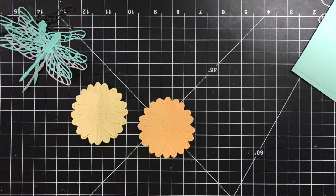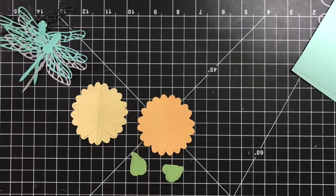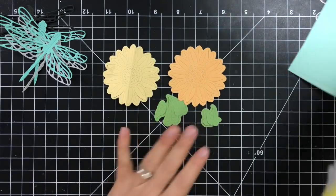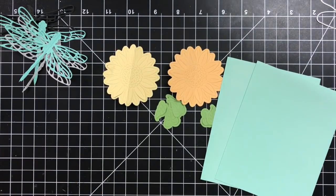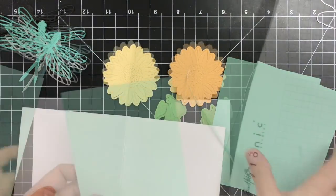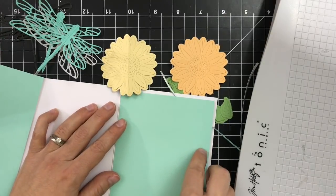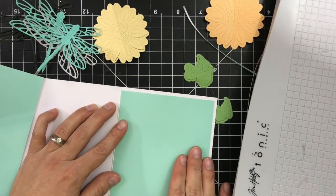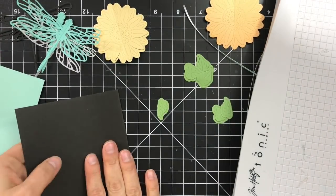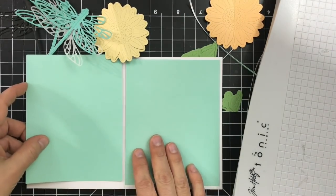As well, I already die cut the sunflower. I did two. The darker yellow I folded in half in valley fold and the lighter one I did mountain fold. And then I die cut some of the leaves from the foliage layering papers.